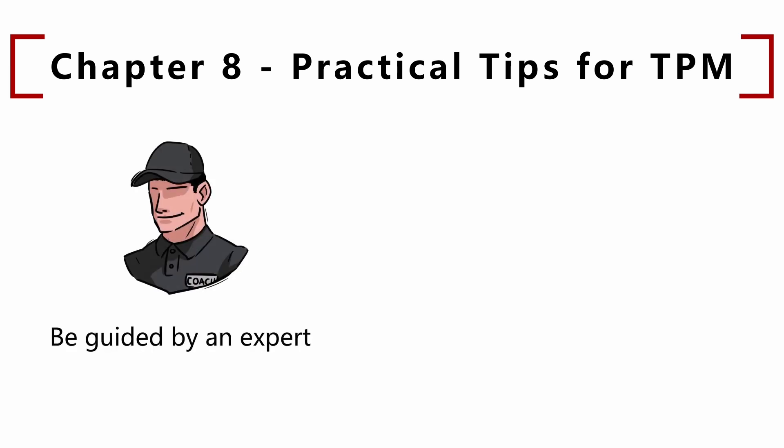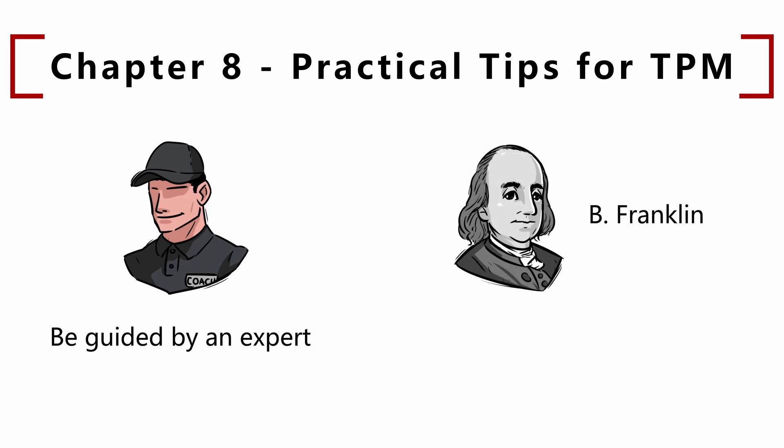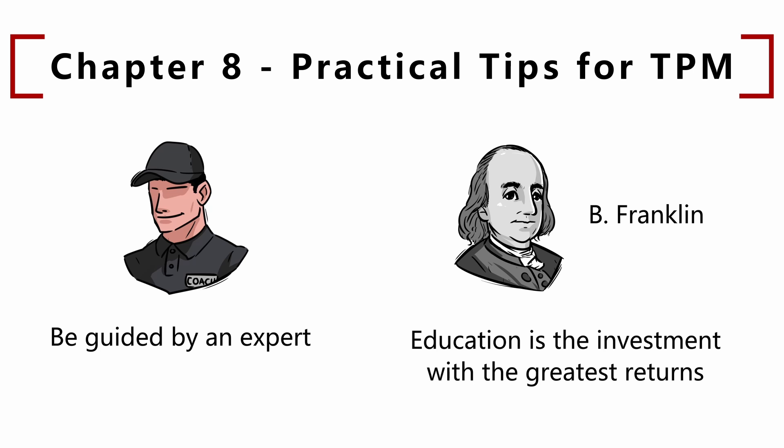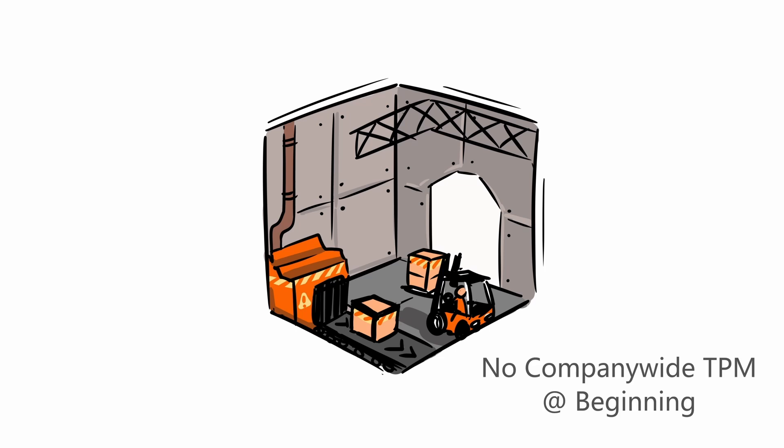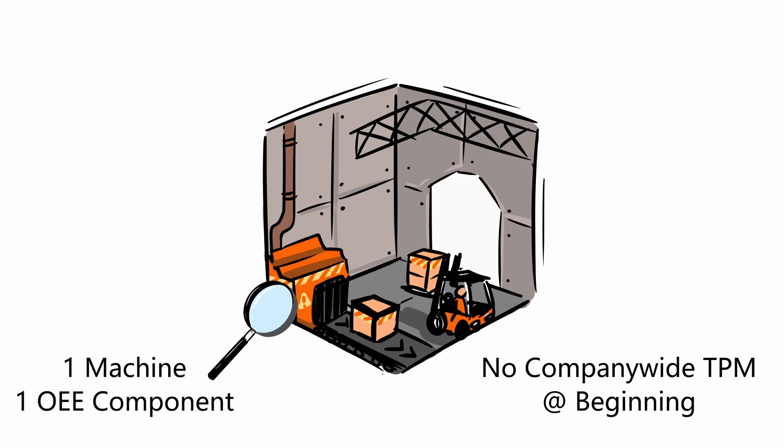Chapter 8: Practical Tips for TPM. Tip 1: Be guided by an expert. If you are at the beginning, it is very important to be guided by an expert who can explain the first steps on the basis of consolidated experience. As Benjamin Franklin said, 'Education is the investment with the greatest returns.' Tip 2: Don't start with a company-wide TPM program. Start with one machine and focus on only one of the three components of OEE — for example, availability. When you have measured and improved the first factor, spread to the others and then to other machines.